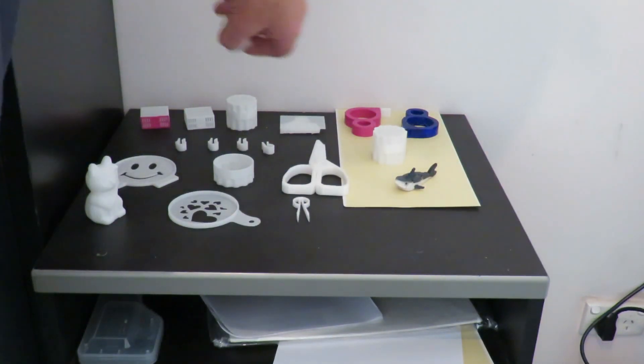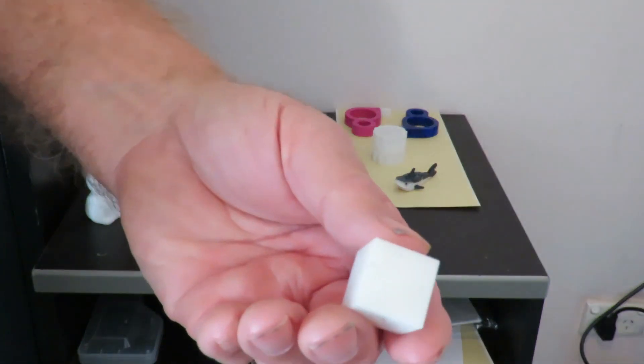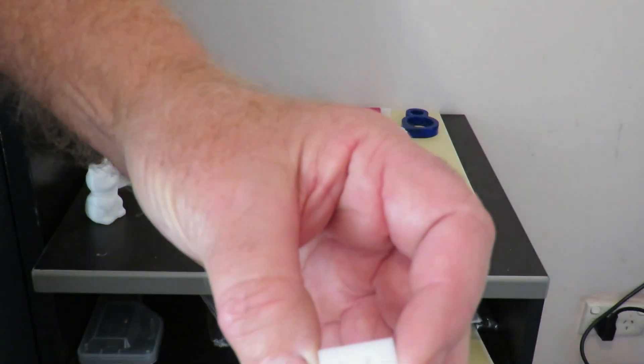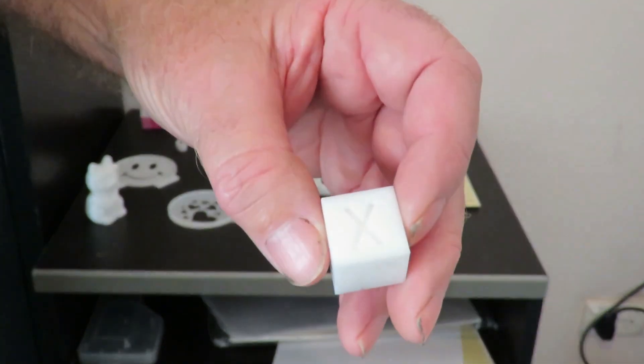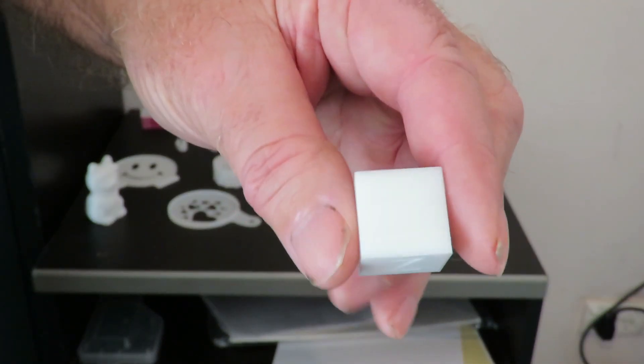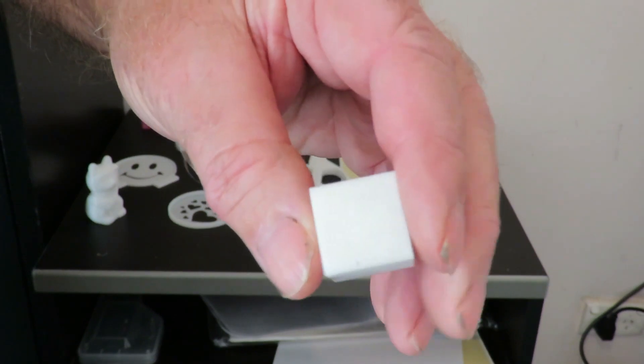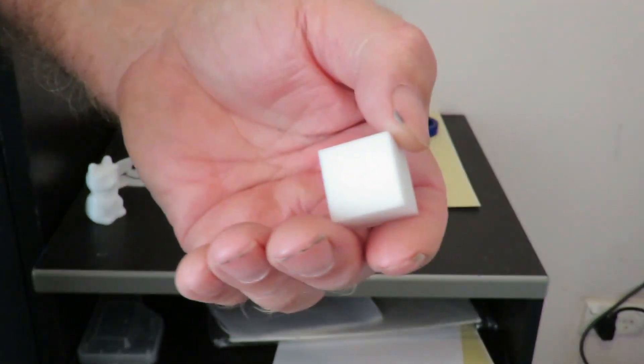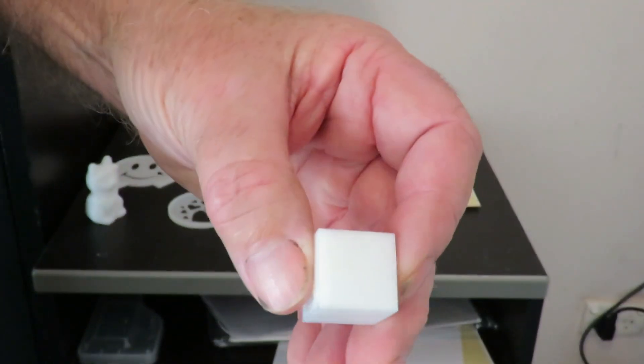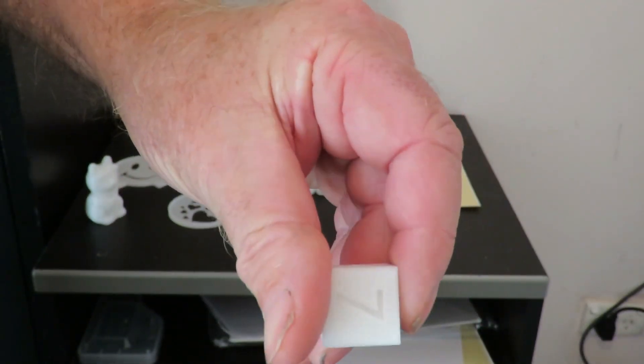One of the other things of course you always print out in the beginning is a little cube to test how accurate the thing is. So yeah I'm pretty happy again with this. 0.1 of a millimeter out on one of the axis. Everything else is correct so I can't argue with that for a standard out of the box printer. That works quite well.